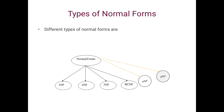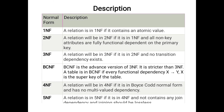For every normal form there are terms and conditions, and with the help of those we convert the given relational table into that form. In this session we will discuss only the definitions. What is First Normal Form? If a relational table maintains atomic values only, then we say that table is in First Normal Form.